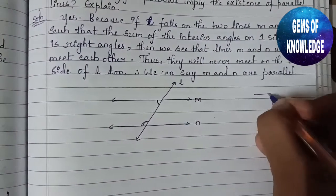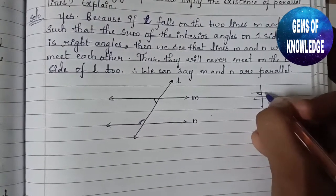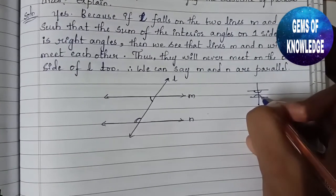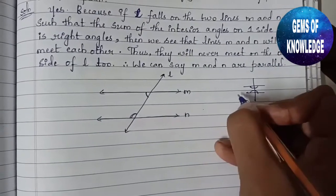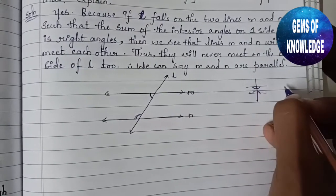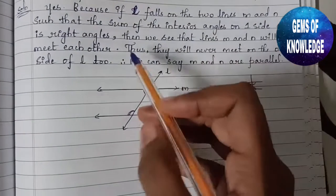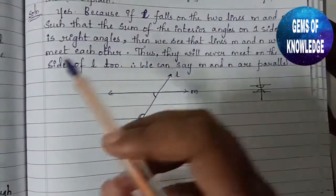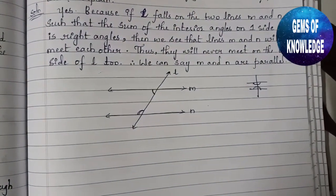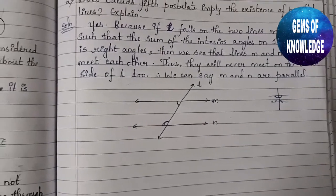Just think of it this way: if this angle is 90 degrees, then obviously the other will also be 90 degrees. It means both lines are parallel — they form a straight line and must be parallel to each other. So they will never meet on the other side of l either, and we can conclude that m and n are parallel lines.